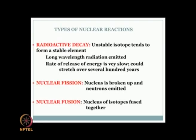There are three types of nuclear reactions: radioactive decay, nuclear fission, and nuclear fusion. In radioactive decay, an unstable isotope moves toward a stable element, emitting alpha radiation and releasing energy. However, the rate of energy release is very slow — it can stretch over several hundred years — making radioactive decay difficult to use for propulsion.